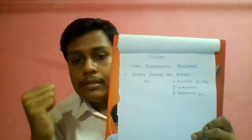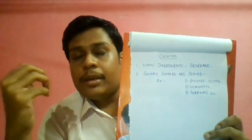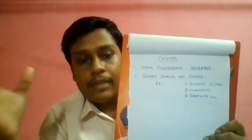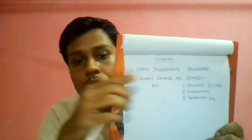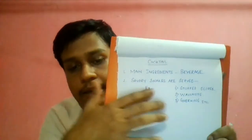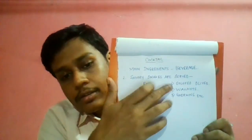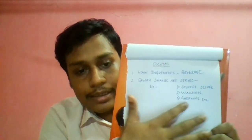The last type is the cocktail party. The main ingredient of a cocktail party is beverages — mostly alcoholic, though sometimes non-alcoholic. Some food items are also served, mainly savoury items that have their own pungent taste, like pickles or achars. Examples include stuffed olives, walnuts, and gherkins. Those are the types of menus an establishment can provide.